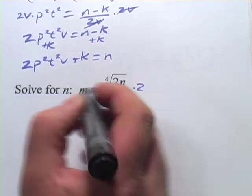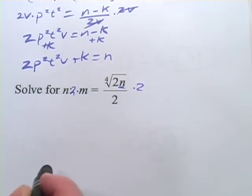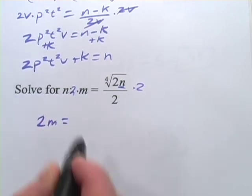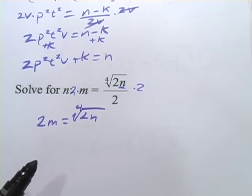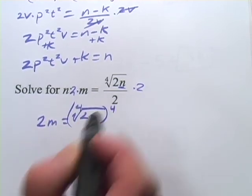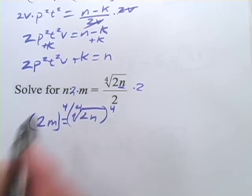So I'm going to multiply by 2. So I get 2m equals the fourth root of 2n. Now that fourth root is alone. So we can go ahead and raise this to the fourth power, raise this to the fourth power.